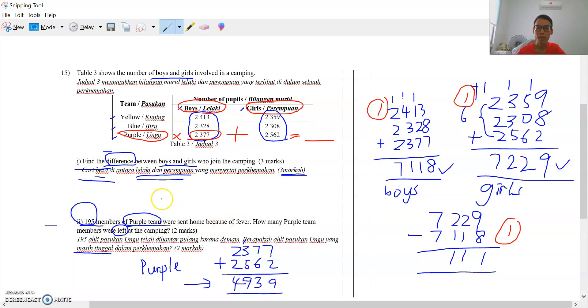And then 195 members went home because of fever. So how many were left? Berapa yang tinggal? So then you take this total minus 195, those who got fever and sent home. 3 cannot minus 9, we borrow. So this one plus 10, this one minus 1. So the final answer is 4,744.